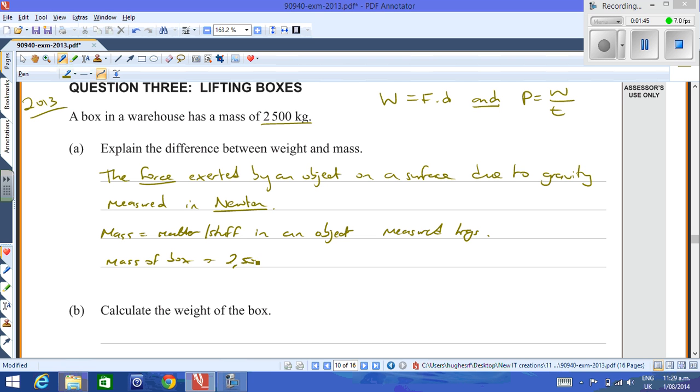The next question wants you to work out the weight. Well, the weight is equal to mass times gravity, which is equal to 2,500 kilograms multiplied by the force of gravity on Earth, which is 10 meters per second squared, and that gives you a value of 25,000 Newtons. So that's the weight of the box.